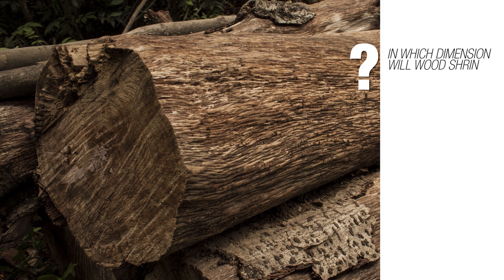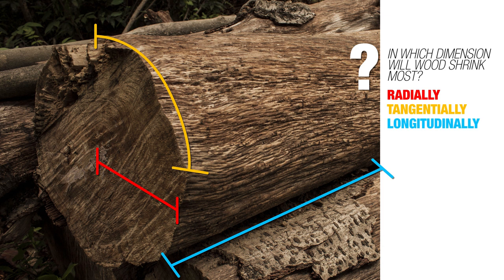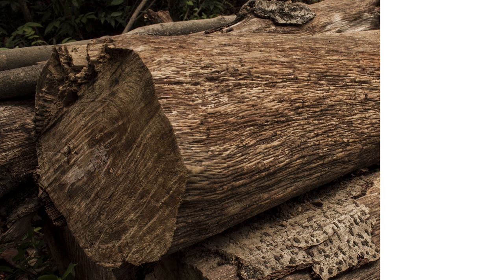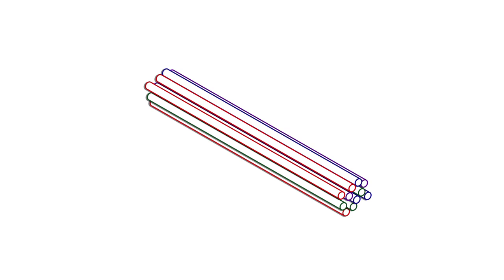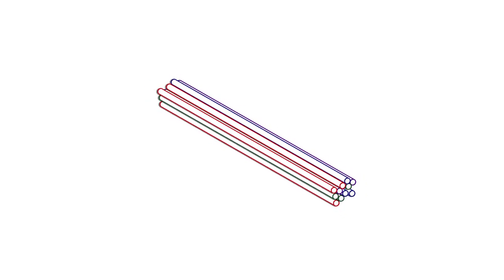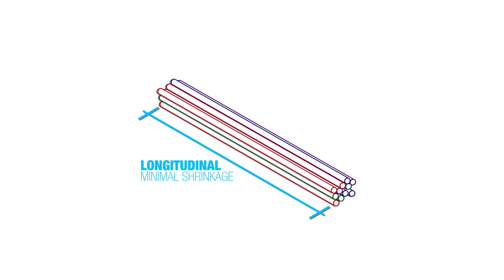In which dimension will wood shrink most — radially, tangentially, or longitudinally? This is one of the quirky qualities of wood brought about by the geometry of wood and the linearity of the cellular structure — the bundle-of-straws nature of wood. As water leaves the cells, the cells shrink. In the longitudinal dimension, shrinkage is going to be pretty minimal because there just aren't that many cells in that dimension — the cells are very long.